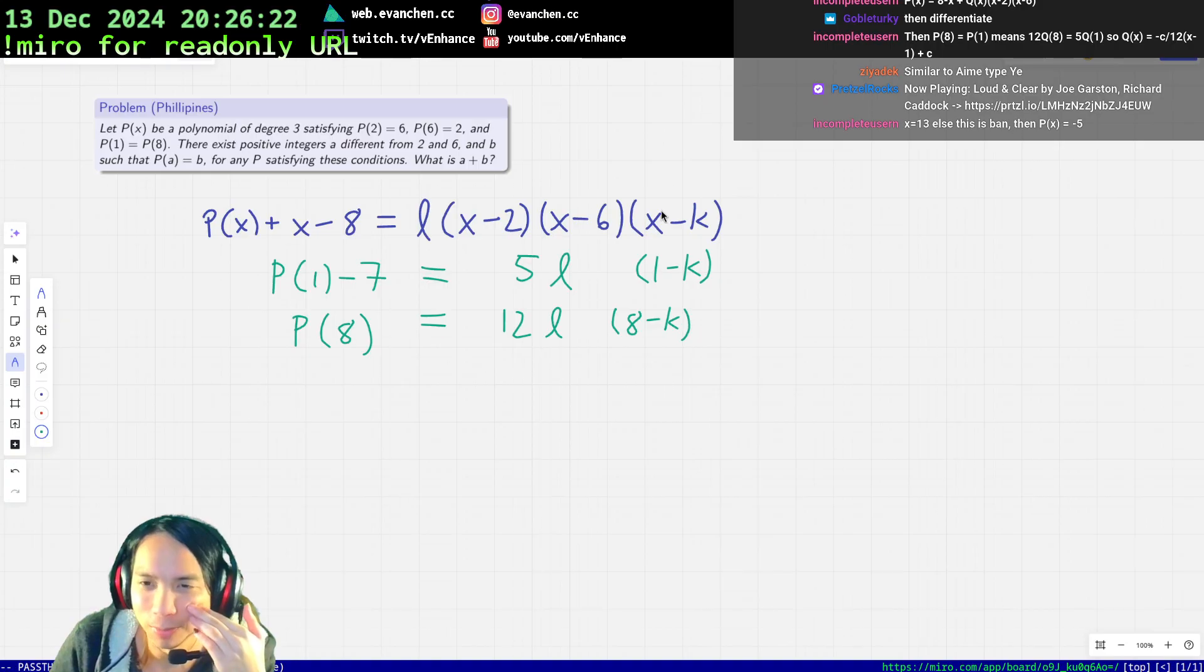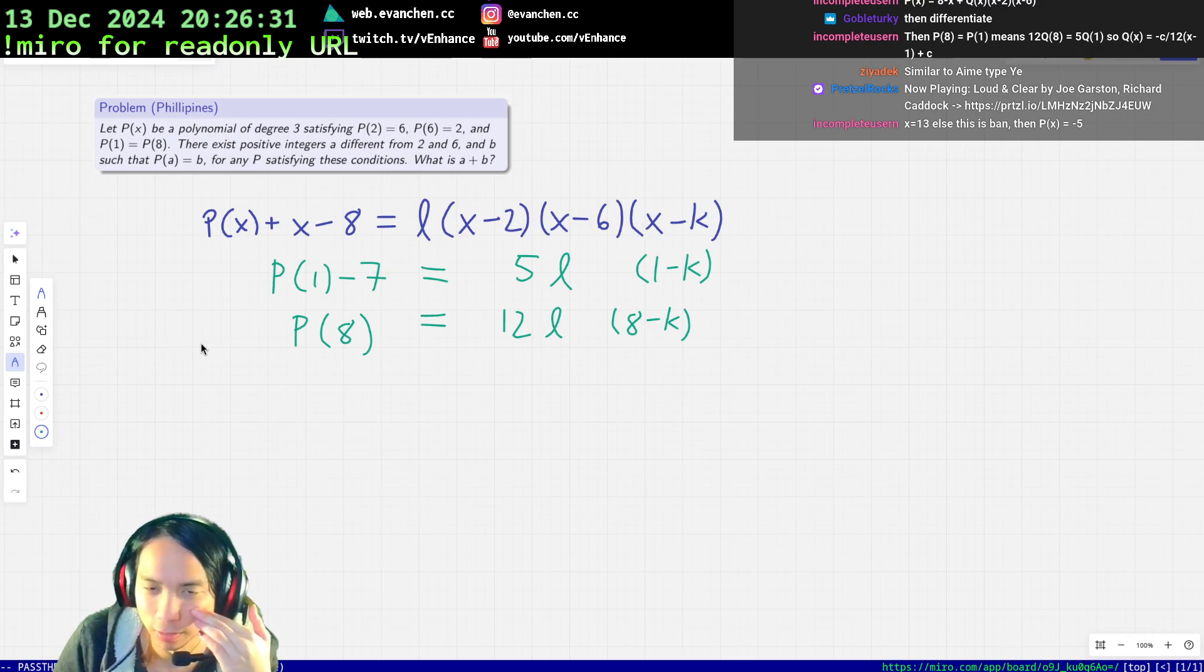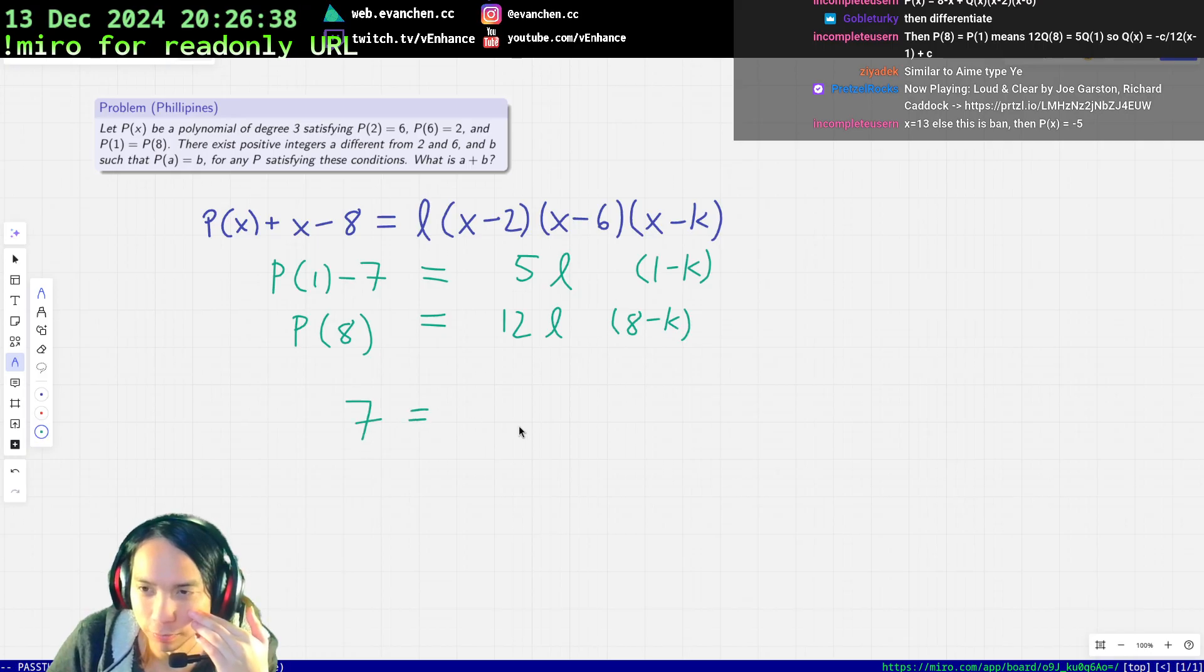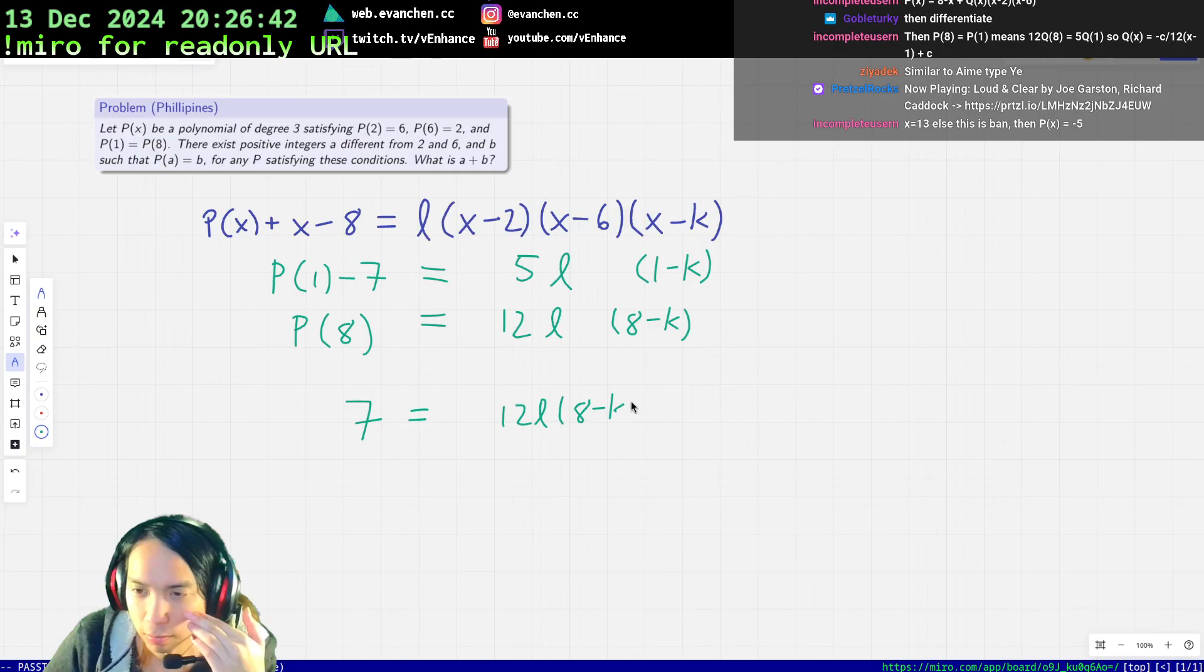So there's some a such that these two conditions together imply this thing up here is fixed, which I think means I just subtract. Well, I need to kill the P(1) and P(8), right? So if I subtract these it tells me that 7 equals minus 5l times (1 minus k).